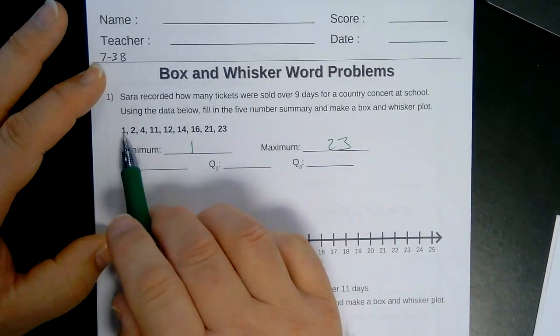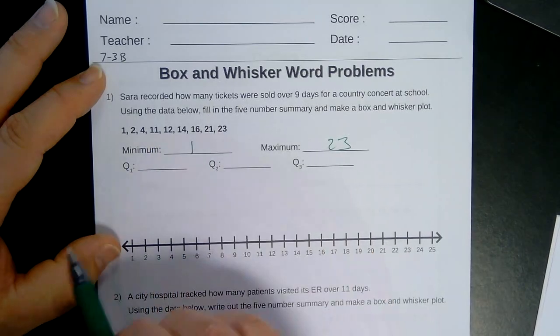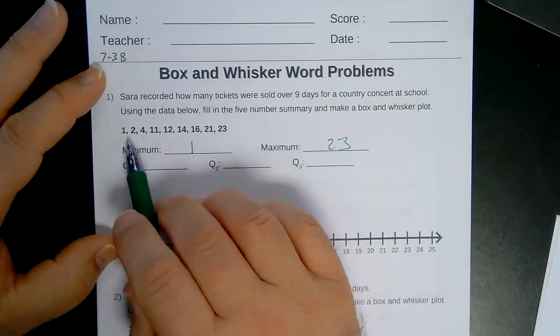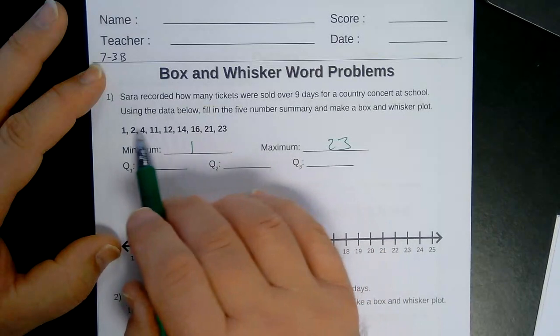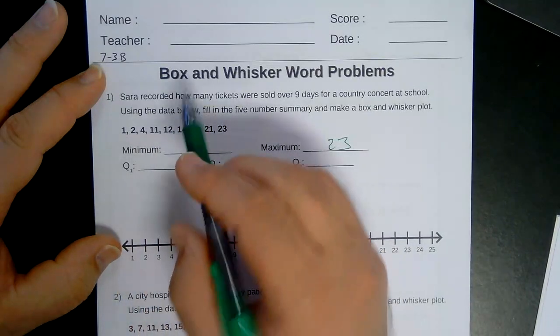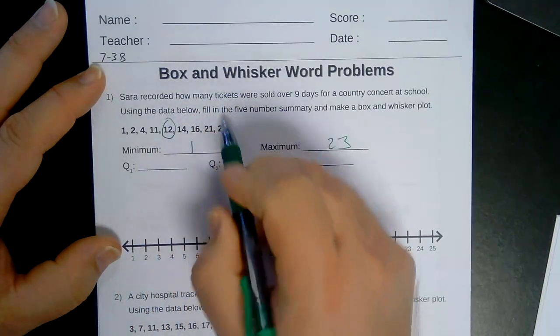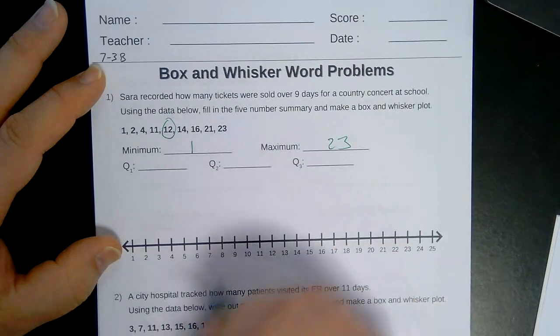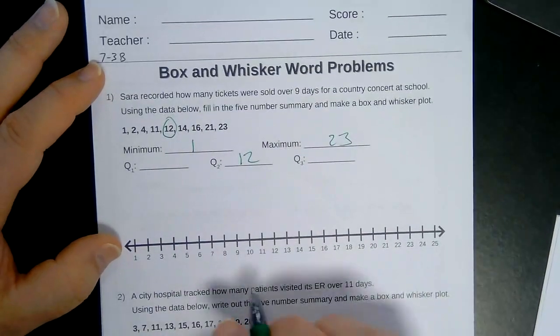Let's count the numbers off. We have 1, 2, 3, 4, 5, 6, 7, 8, 9 numbers. So I'm looking at the fifth number from both directions. So 1, 2, 3, 4, 5, that would be 12. And 1, 2, 3, 4, 5, that would be 12. So there's quartile 2.